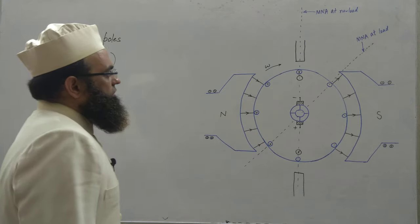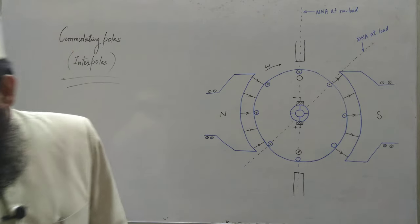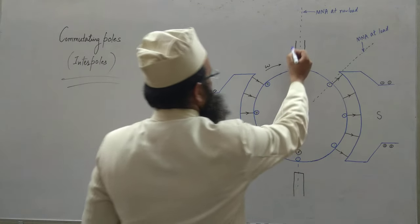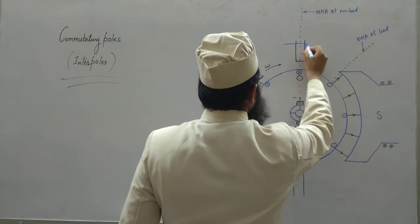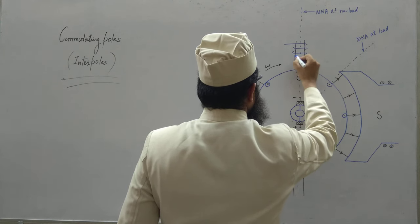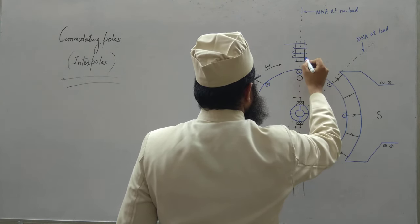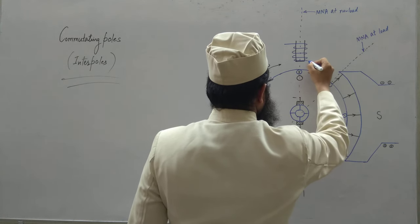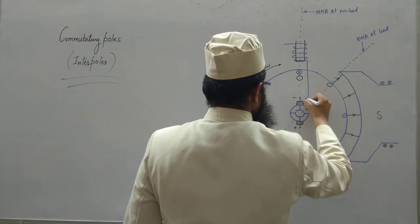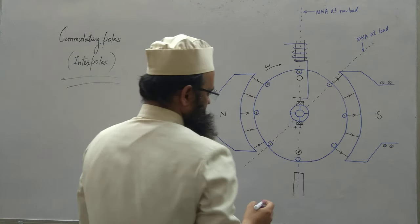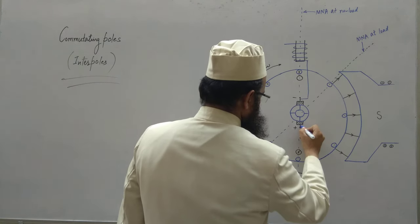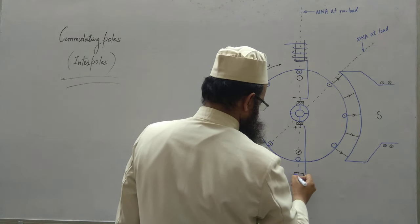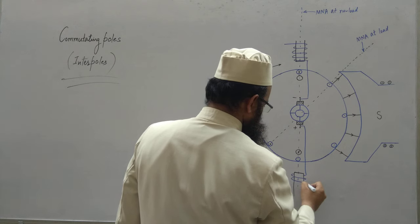The coils of the commutating windings are connected in series with the armature winding, so that armature current can flow through them.